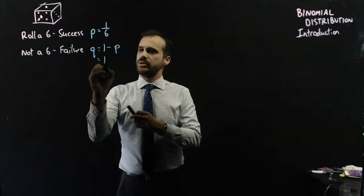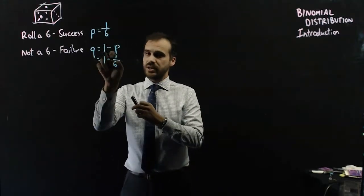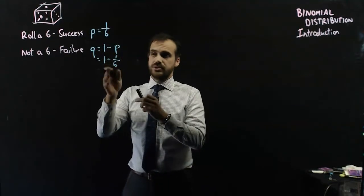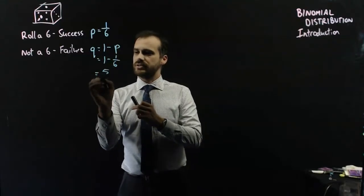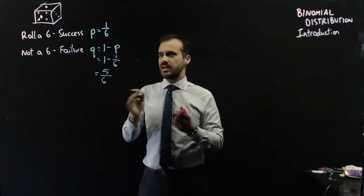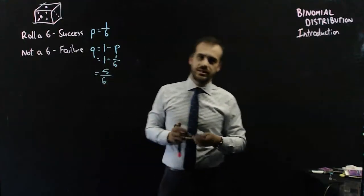In a Bernoulli sequence, the probability of failure is always 1 minus the probability of success. 1 minus P, which is 1 minus 1 in 6. The reason for that is because something has to happen. If success doesn't happen, then failure will happen. So 1 minus success will equal failure, 5 in 6.